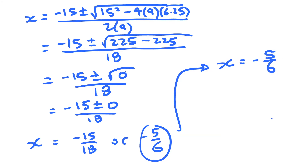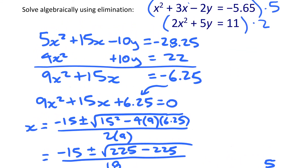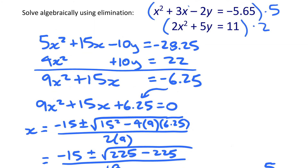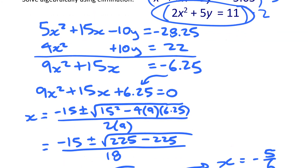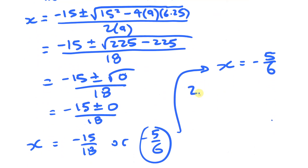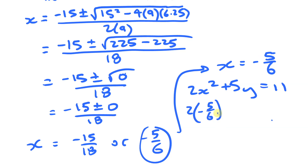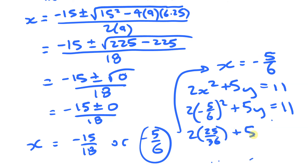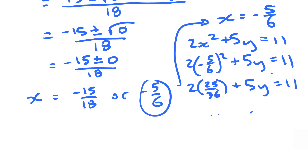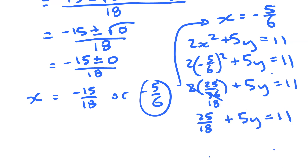To find the y value, I'll take x = −5/6 and work with it as a fraction. Using the simpler equation, 2x² + 5y = 11, substituting gives 2·(−5/6)² + 5y = 11. That gives 25/36 · 2 + 5y = 11, which is 50/36, reduced to 25/18.